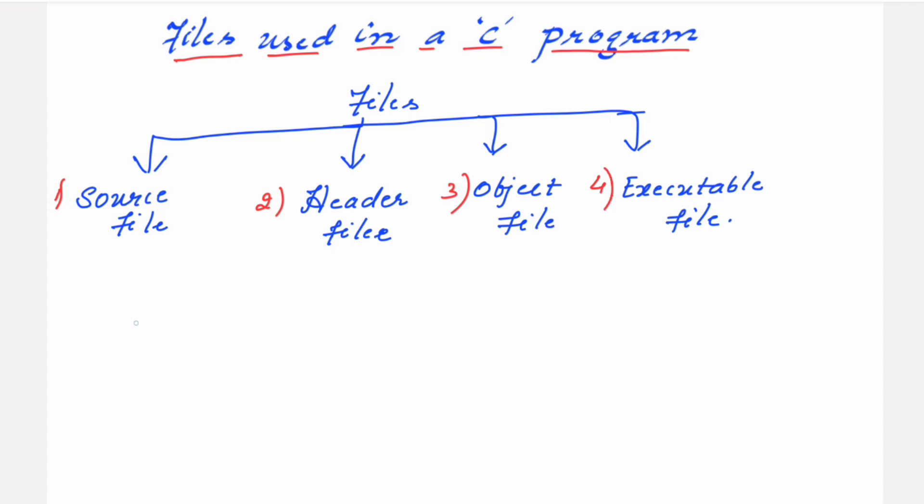Now you have a program written. Let me take one simple example. I will just write one simple program and then I will explain how all these files are getting interrelated. Actually, it is not a classification of files, it is just one file which is having the relation with the header file, object file, and executable file.